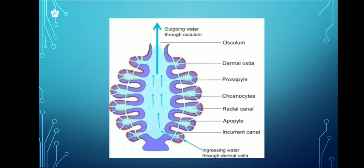The next diagram is shown. You can see what is happening from the Dermal Ostia — it moves water into the upper side. First, water enters at Dermal Ostia, then the Incurrent Canal, then the Prosopile, then the Radial Canal, then Choanocytes, then the Apopyle, and finally into the Spongocoel. The extra water that the body does not need goes out with the help of the Osculum.